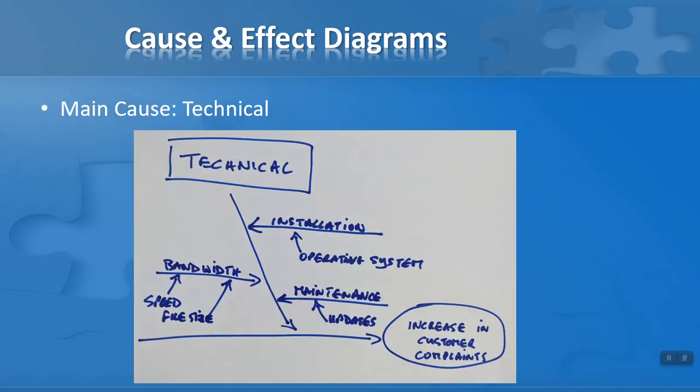I'm not going to work it out here, but I'll just take a look at one of the five main categories: the technical main cause. I have broken it down into three primary causes. These are along the right-hand side pointing to the left: installation and maintenance. And then on the left-hand side pointing to the right, primary cause of bandwidth.